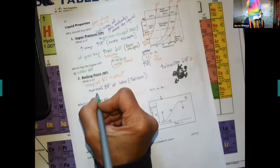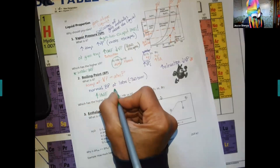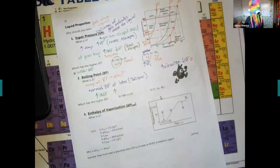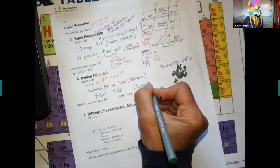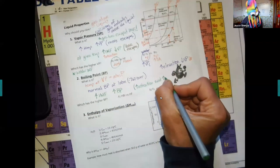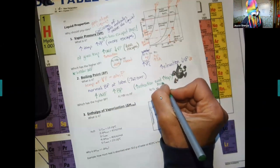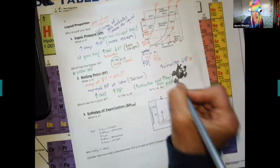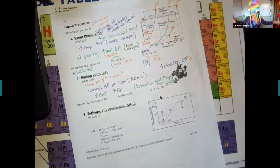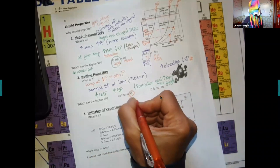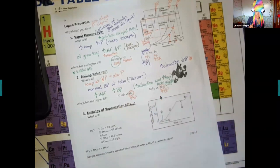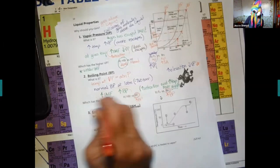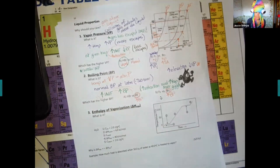As you increase the IMF, you are going to increase the boiling point. As you increase the attraction, you need a higher temperature. You need more giggles. Temperature is how much kinetic energy. You have to give it more jiggles so you can shake it apart. So we need a higher temperature. In this case, the HF has the higher boiling point. The bromine has the higher boiling point.